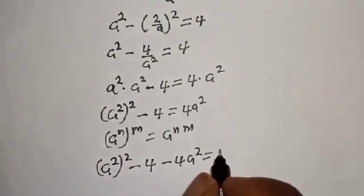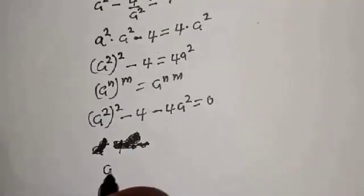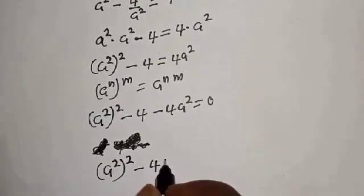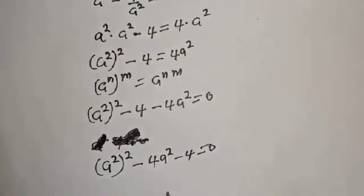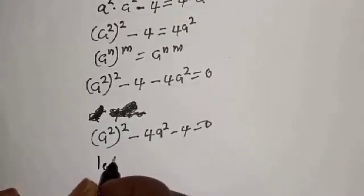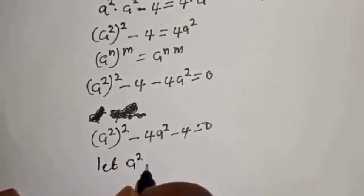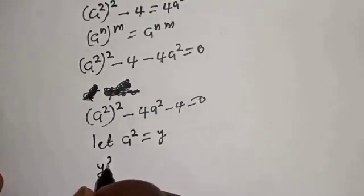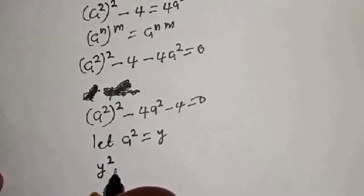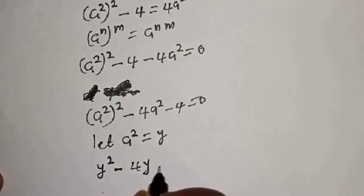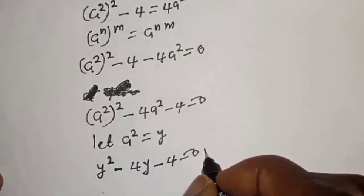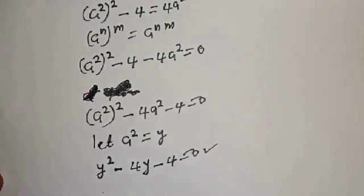Rearranging: a to the power 4 minus 4a squared minus 4 is equal to 0. This is a quadratic equation in a squared, which can be solved using the quadratic general formula.